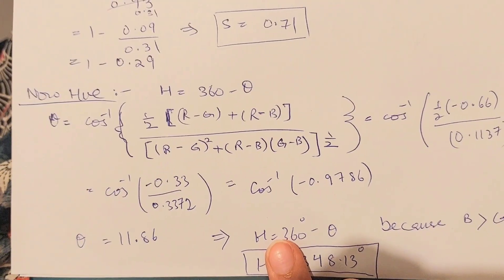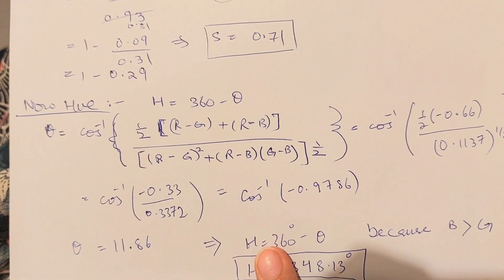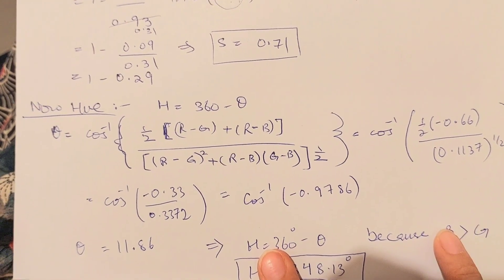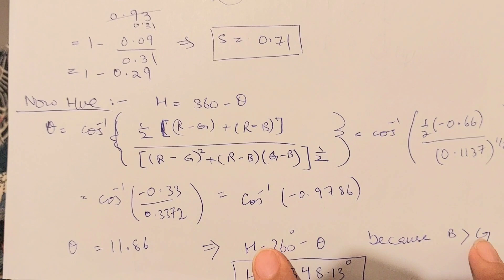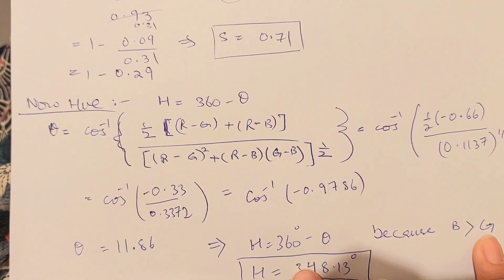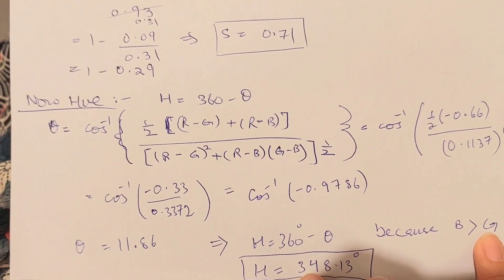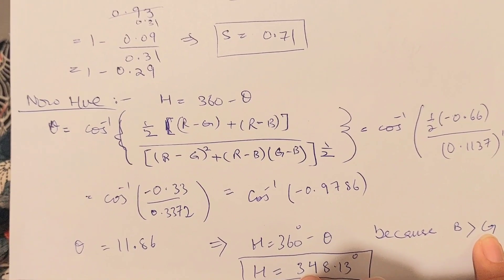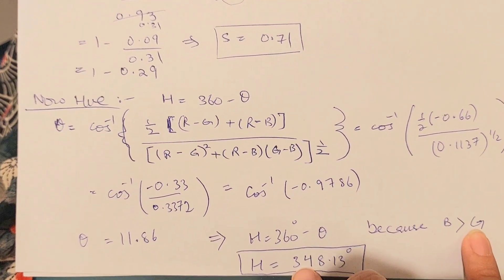Now, if I had to use simply theta, then my work was finished over here. But since in my case hue is 360 degrees minus theta, because the intensity of blue color was higher than the intensity of green color, I'll subtract this 11.86 from 360, and the answer for hue is 348.13.